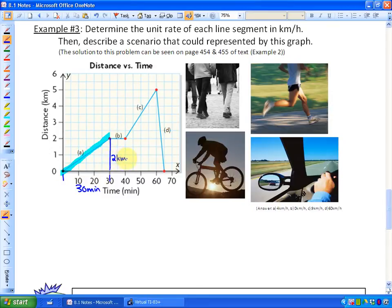Now the goal, let's just look at line segment A. The goal here is we would like kilometers per hour. And what we know right now is we've traveled two kilometers in 30 minutes.